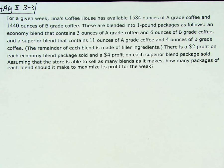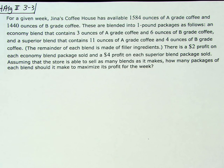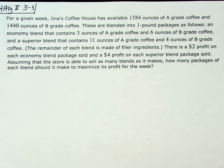Our problem reads: for a given week, Genus Coffeehouse has available 1,584 ounces of A-grade coffee and 1,440 ounces of B-grade coffee. These are blended into one-pound packages as follows: an economy blend that contains 3 ounces of A-grade coffee and 6 ounces of B-grade coffee, and a superior blend that contains 11 ounces of A-grade coffee and 4 ounces of B-grade coffee.